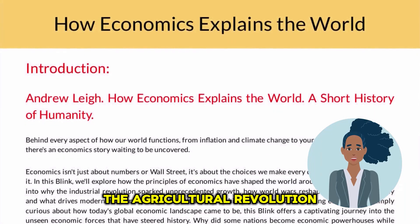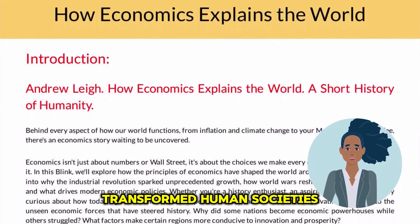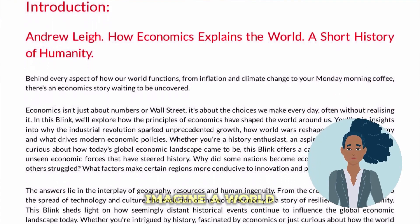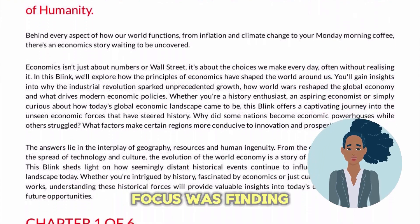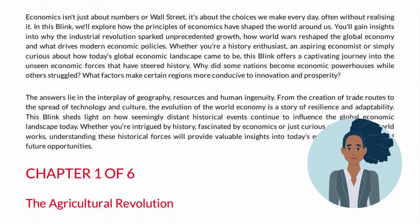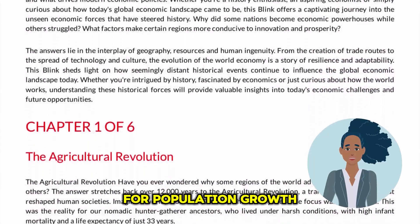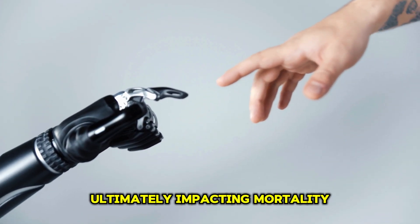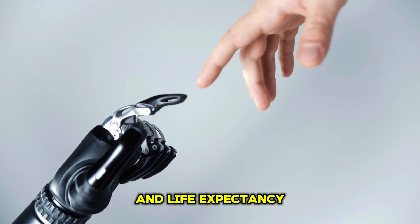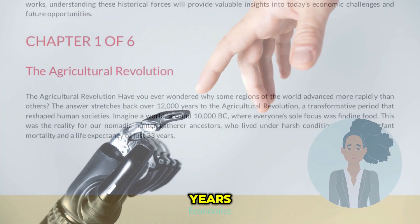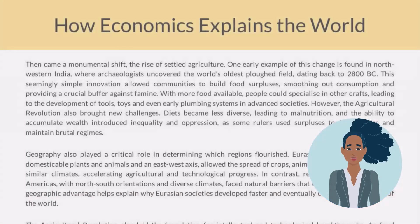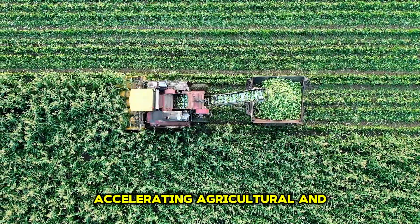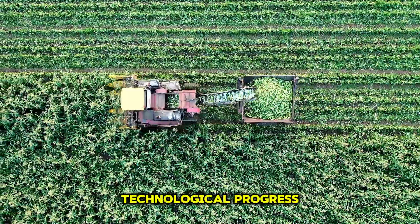The agricultural revolution transformed human societies as hunter-gatherers became food producers. Imagine a world where everyone's sole focus was finding food. This shift allowed for population growth and technological advancement, ultimately impacting mortality and life expectancy within just 33 years, accelerating agricultural and technological progress.